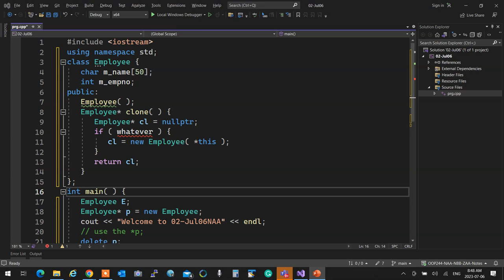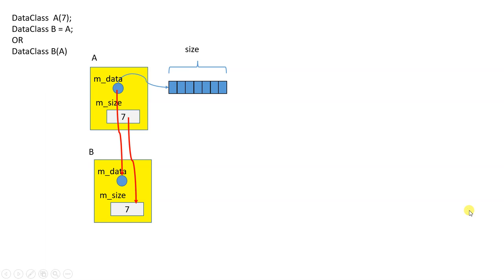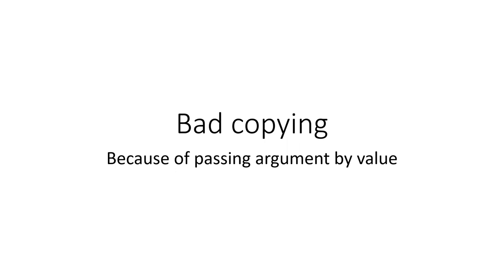The bad assignment is one case where the Rule of Three was not followed. The same issue applies to bad copying. When you do assignment at the moment of creation — that is a call to the copy constructor, not the assignment operator. Assignment operator at the moment of creation is copy constructor. Very important fact. Exactly the same thing happens — as soon as it copies, they share resources unintentionally, and when one destructor goes, the other causes a crash.